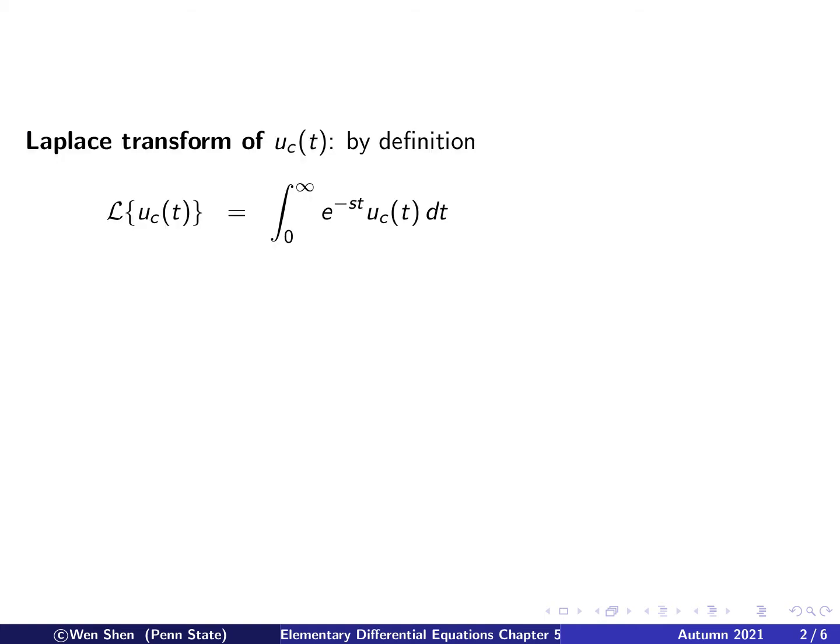In this video, we continue our discussion on the step function and its representation for discontinuous functions. Let's now look at the Laplace transform of the unit step function. So, uc of t, we defined already, is a function that is 0 for t less than c and is 1 for t bigger than c. Here c is a positive constant, and we are only interested in the function for t bigger than 0.